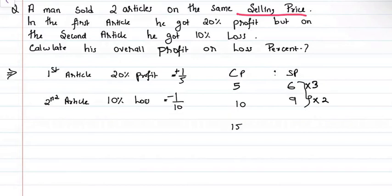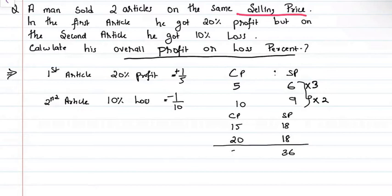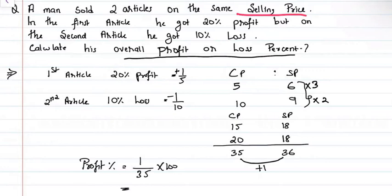So overall he got a loss. The overall result comes to 20 by 7 percent loss. The selling price totals 36, and cost price totals 35. Since selling price 36 is greater than cost price 35, there is a profit of 1. Profit percent equals 1 divided by 35 into 100, which equals 20 by 7 percent.